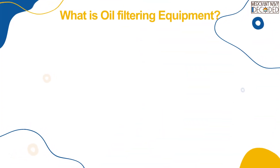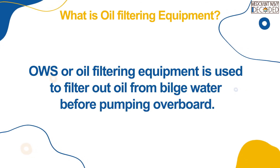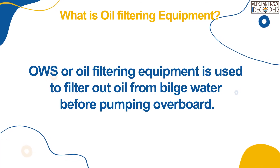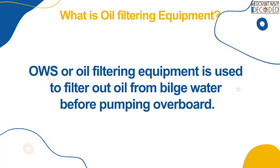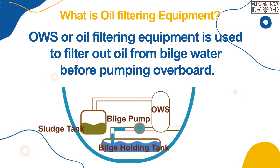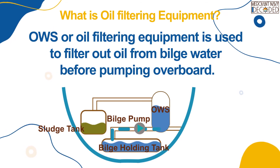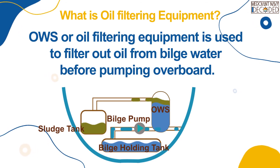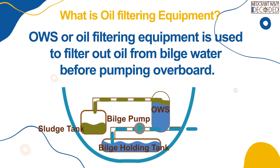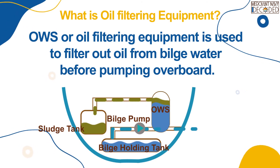8. Oil filtering equipment: the oily water separator or oil filtering equipment is used to filter out oil from bilge water before pumping overboard. As seen earlier, bilges were transferred from bilge wells to the bilge holding tank. Now from the bilge holding tank, through a pump, these bilges via the oily water separator are transferred overboard into the sea. 9. And if there are any oil remains, they go back into the tank.